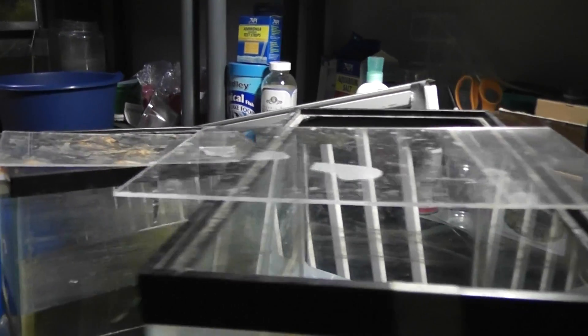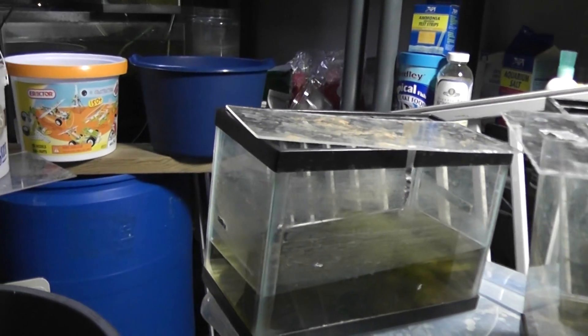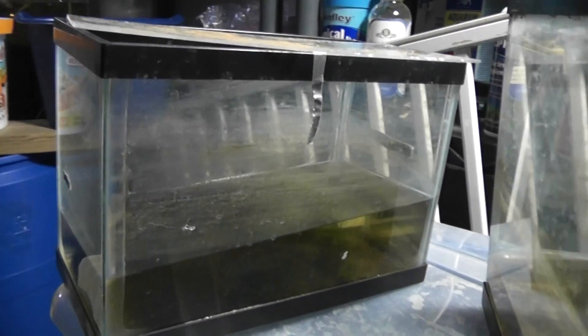Just a little preview of different spawning containers that I use in tanks. Some are rectangular as you can see these first two ones. I got a five gallon one here and then a two and a half.